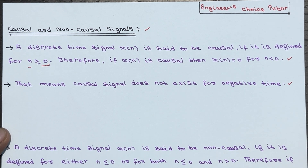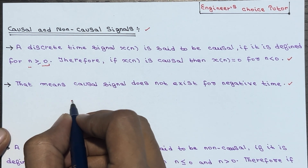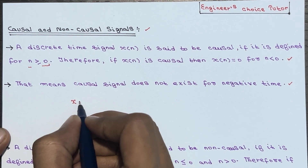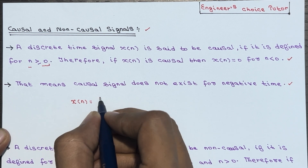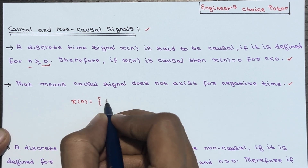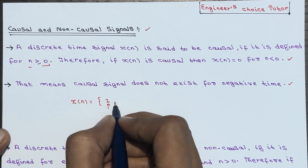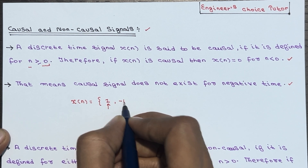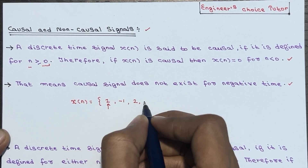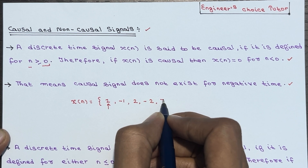Now let's see a few examples for causal signals. Suppose I have x of n equal to 1 at n equal to 0, then minus 1, 2, minus 2, and 3.